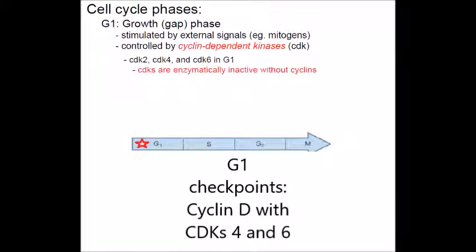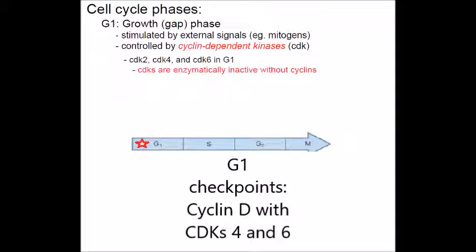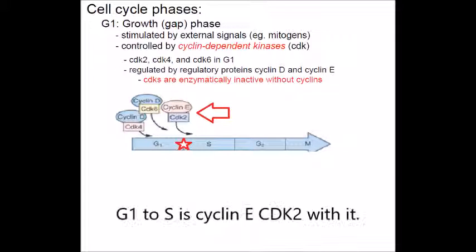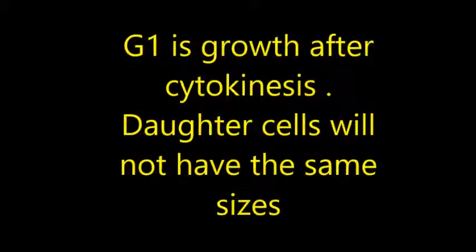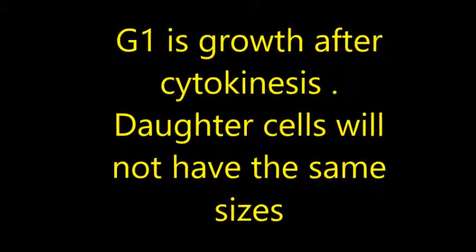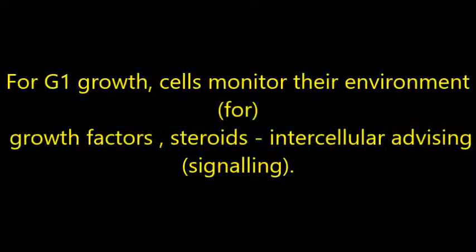G1 checkpoint: cyclin D with CDK 4 and 6. G1 to S is cyclin E with CDK 2. What's that last G1 checkpoint again? G1 to S is cyclin E with CDK 2. Thanks.